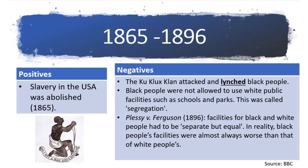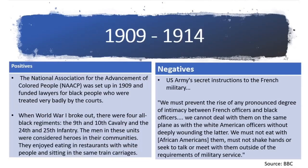Before we start, it's important to look at the background. Slavery was abolished in the USA in 1865, but racism, particularly in the South, continued. Black people lived in constant fear of being attacked or even killed, and facilities were segregated, with black people's facilities being far worse. In response to the treatment of black people, the NAACP was set up in 1909. This group proved to be very successful throughout the civil rights movement.